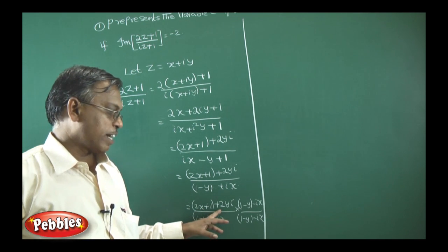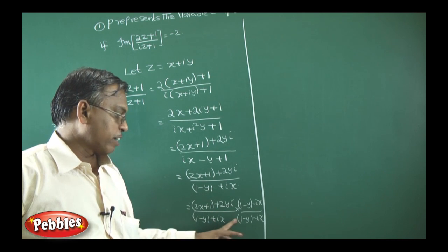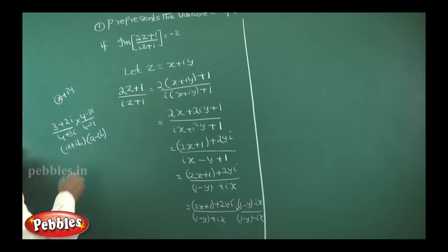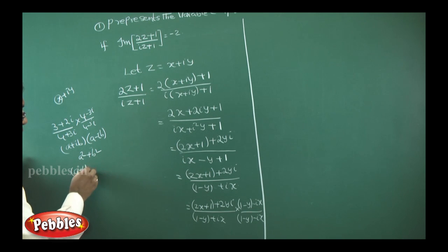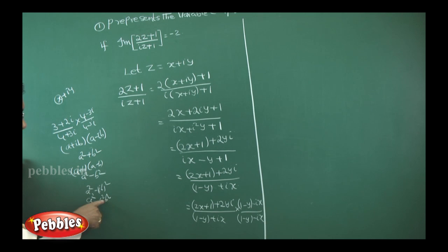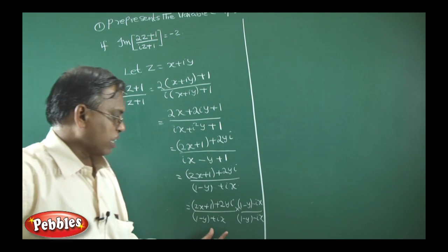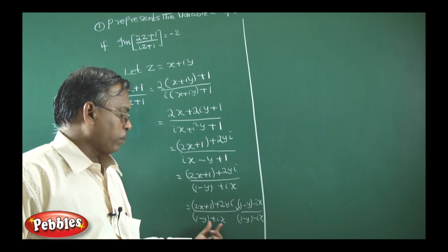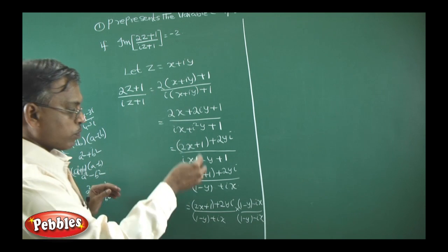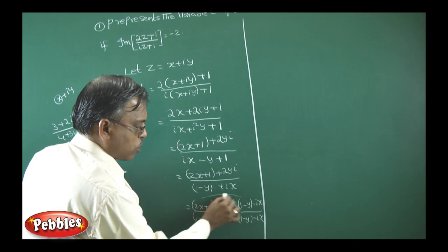The denominator is of the form (a + ib)(a − ib) = a² + b², where a = (1 − y) and b = x. So the denominator simplifies to (1 − y)² + x². For the numerator, multiply the real part (2x + 1) by both terms of the conjugate, and then multiply the imaginary part 2yi by both terms.